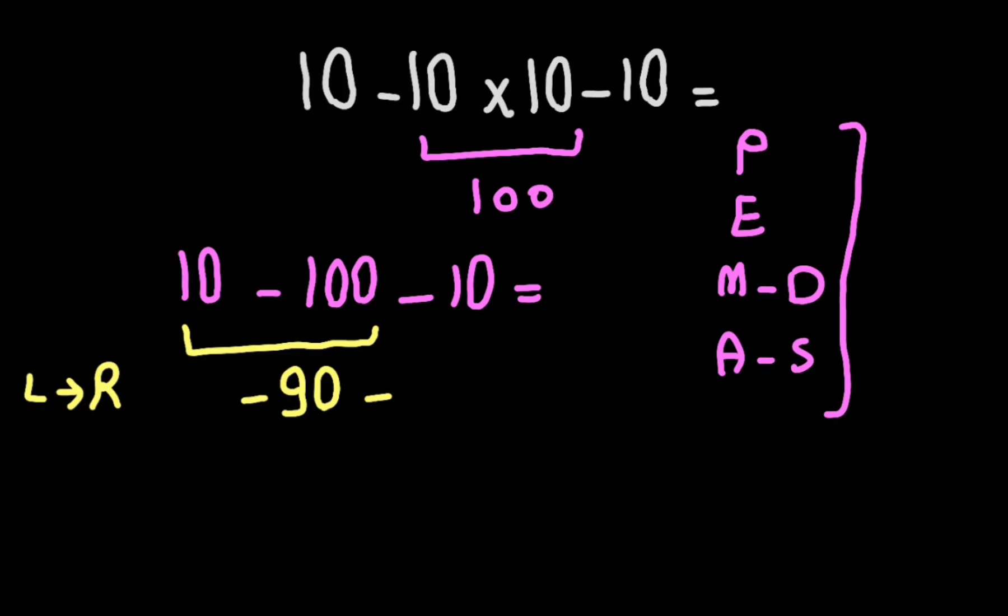Now negative 90 minus 10 gives us negative 100. So the final answer is negative 100. Thank you for watching.